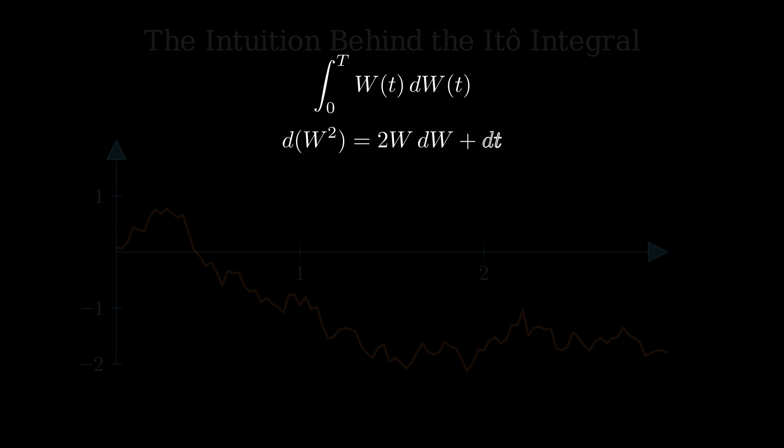Now we integrate this from zero to t. The left side becomes W(t)² - W(0)², and the right side gives us 2 times our integral plus t, because the integral of dt is just t. Since Brownian motion starts at zero, W(0) = 0, the equation simplifies to W(t)² = 2 times the integral from zero to t of W with respect to W plus t.